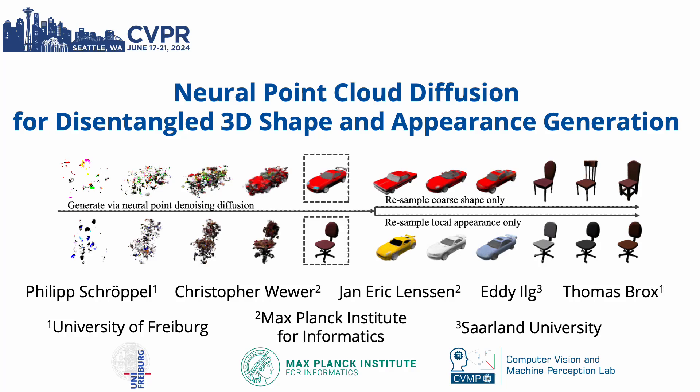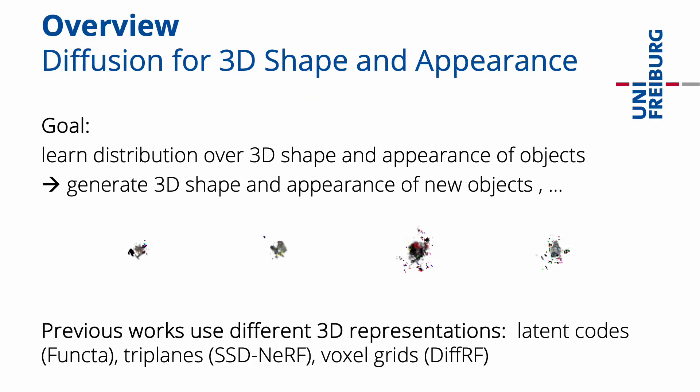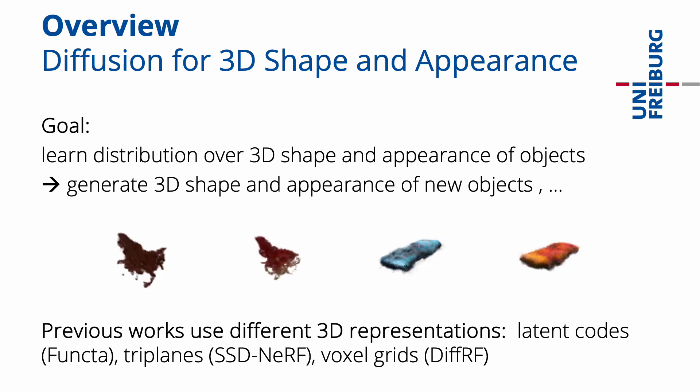We present Neural Point Cloud Diffusion for Disentangled 3D Shape and Appearance Generation, a novel 3D diffusion approach which stands out by operating on a neural point cloud representation that enables disentangled generation of shape and appearance. The diffusion model learns the distribution over the 3D shape and appearance of objects.